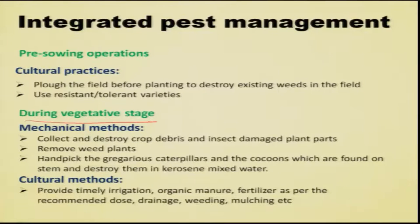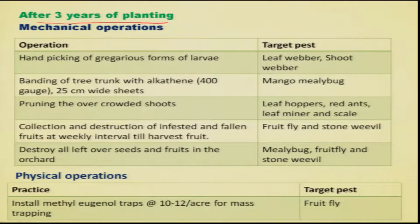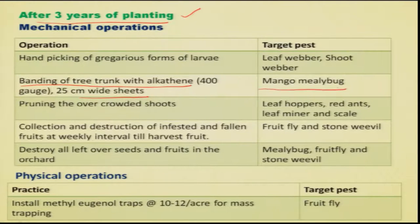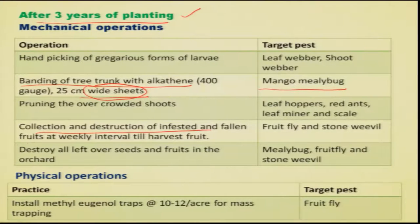During the early vegetative stage, management mostly involves mechanical and cultural methods. After three years of planting, when trees enter the fruit-bearing stage, a combination of all types of mechanisms is needed. Most important is the banding of trees with alkathene sheets, which is essential to control the mango mealy bug by preventing crawlers from climbing the tree trunk. Collection and destruction of infested and fallen fruits at weekly intervals is also quite effective against fruit flies.